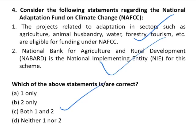Value addition: The National Adaptation Fund on Climate Change is a central sector scheme set up in 2015. Its overall aim is to support concrete adaptation activities that mitigate the adverse effects of climate change. Activities are implemented in project mode. Projects related to adaptation in sectors such as agriculture, animal husbandry, water, forestry, and tourism are eligible for funding. NABARD is the national implementing entity.